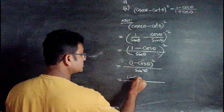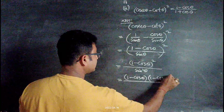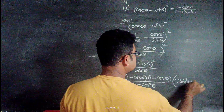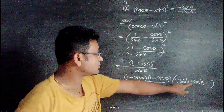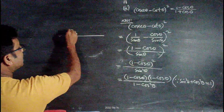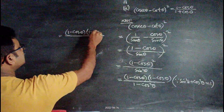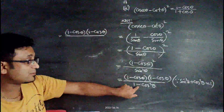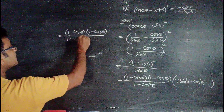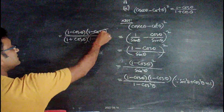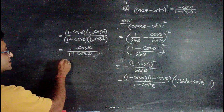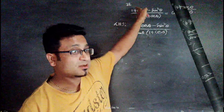Now (1 - cosθ)² = (1 - cosθ)(1 - cosθ), and sin²θ = 1 - cos²θ. Using the a² - b² formula: 1 - cos²θ = (1 + cosθ)(1 - cosθ). The (1 - cosθ) terms cancel, leaving (1 - cosθ)/(1 + cosθ), which is the required right-hand side.